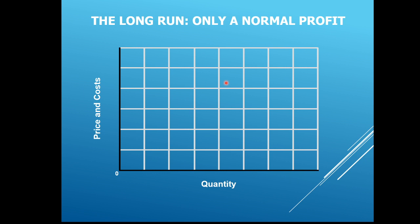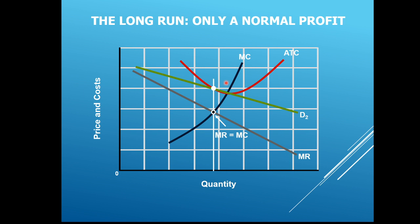In the long run we have zero economic profit, covering our opportunity cost. The ATC curve is tangent to the demand curve at point P2, meaning cost per unit equals the price equals ATC at output Q2 — zero economic profit. Efficiency would be where MC equals demand (allocatively efficient) and where price equals ATC (productively efficient), but those points are not where we maximize profit. We produce where MR equals MC to maximize profit.